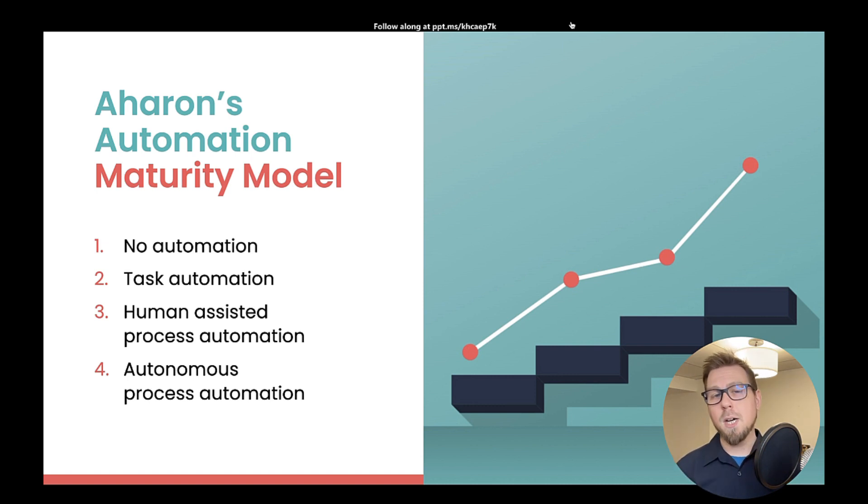All right. And finally, the most mature model here would be autonomous process automation. So maybe you have sensors or timers outside. So when you hit a certain time of day, those lights turn on automatically. You don't even need to worry about it. You have the lighting you need. It all just happens.